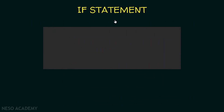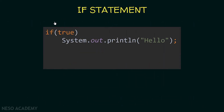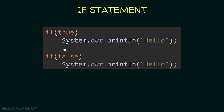Let's see some examples. Here I'm saying: if true, execute this statement. Obviously the condition is true, so this statement will be executed. Another example: if false, execute this statement. As you can see the condition is false, so this statement will not be executed.